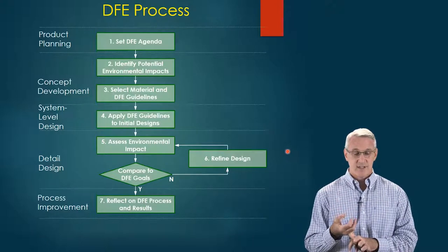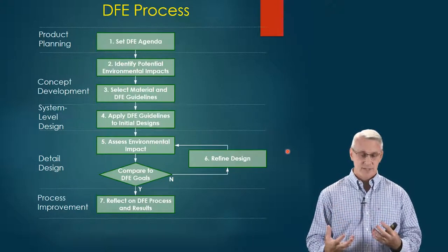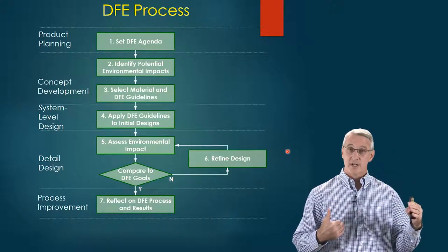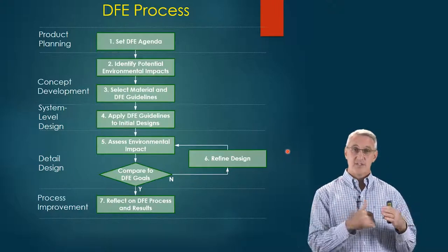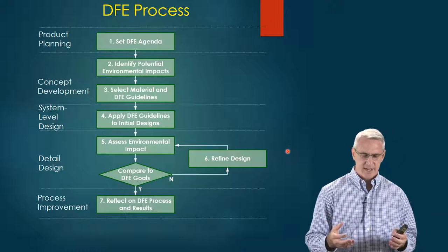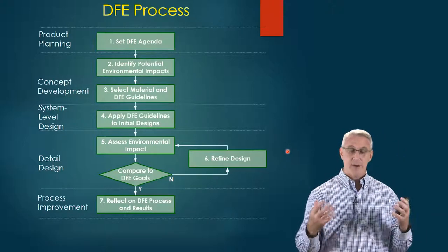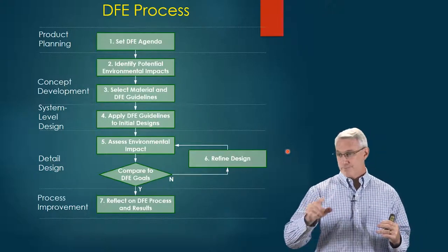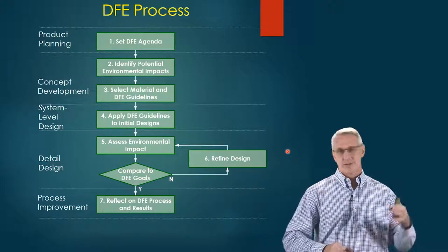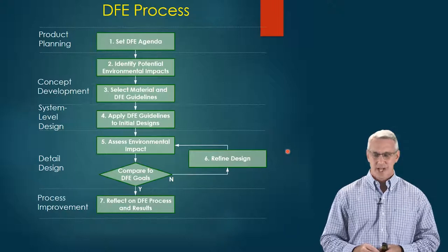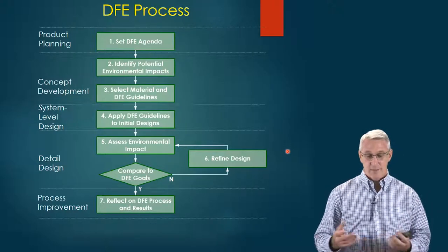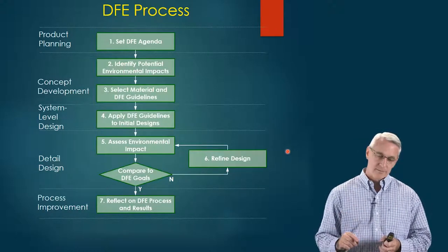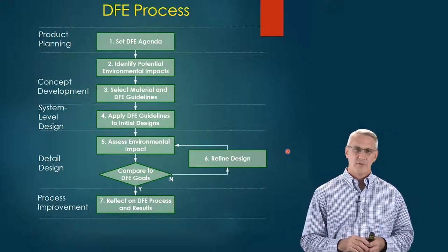Then we select our materials and DFE guidelines. At system-level design, we apply our guidelines to our initial designs, and that should include benchmarking of how we're doing on those specification factors. At the detailed design stage, we assess the environmental impact based upon what we've chosen — this gets down to our bill of materials, how many pounds of metal or tons of plastic we're going to use. We compare that to our goals, and if we can refine and modify or make different choices, we do so. We can iterate that until we're comfortable with it.